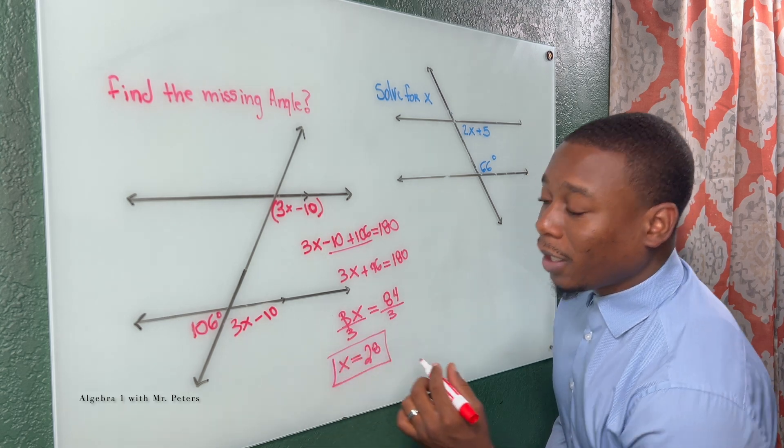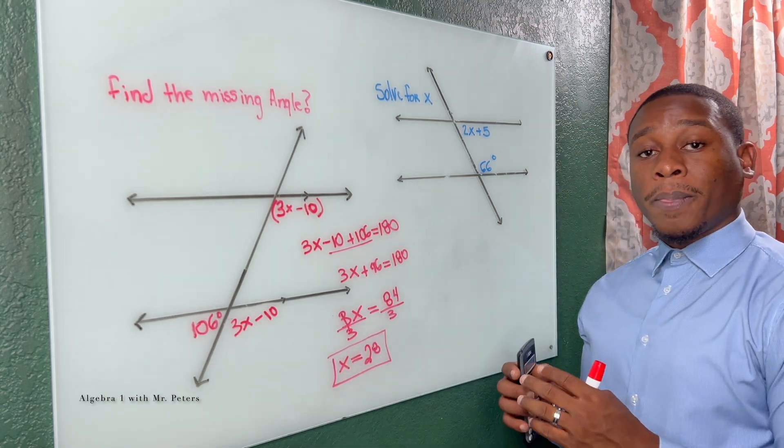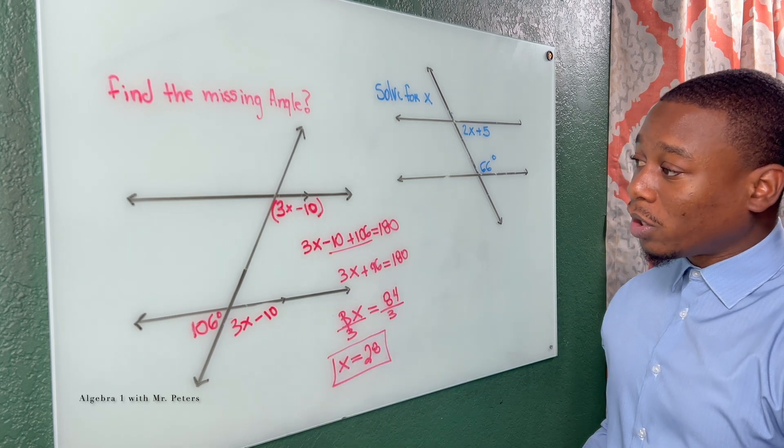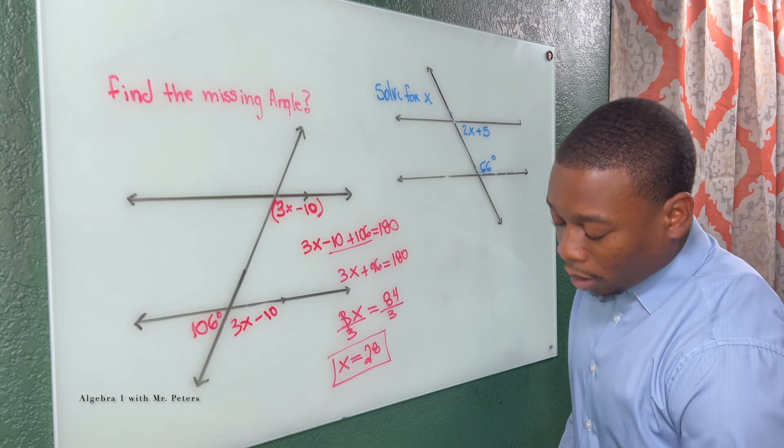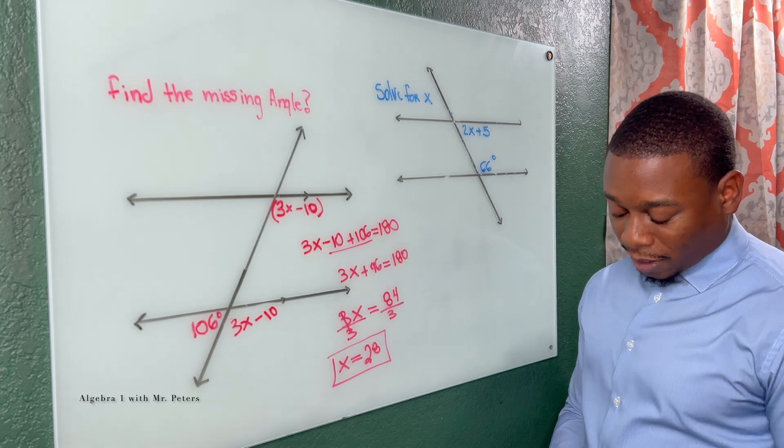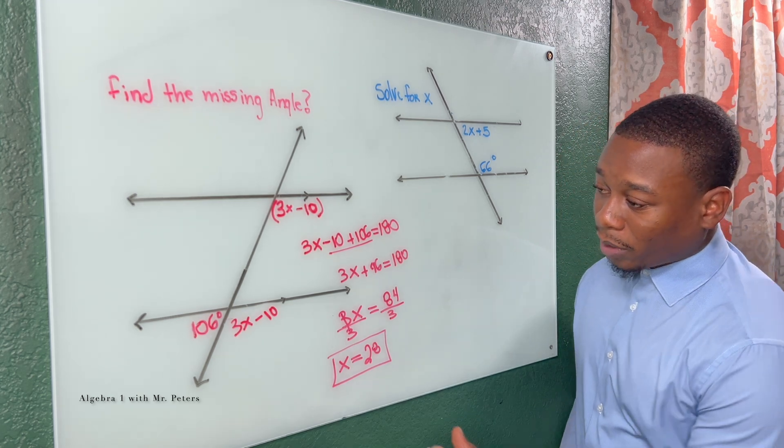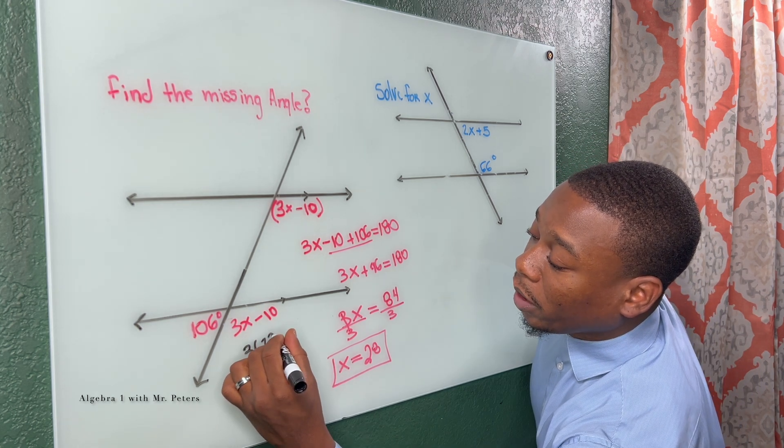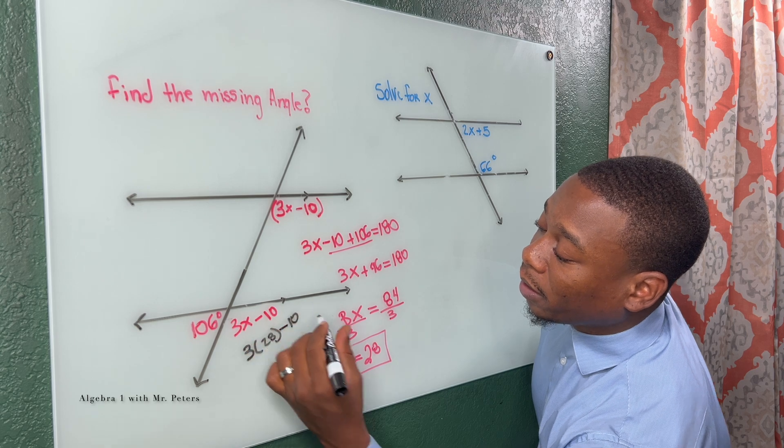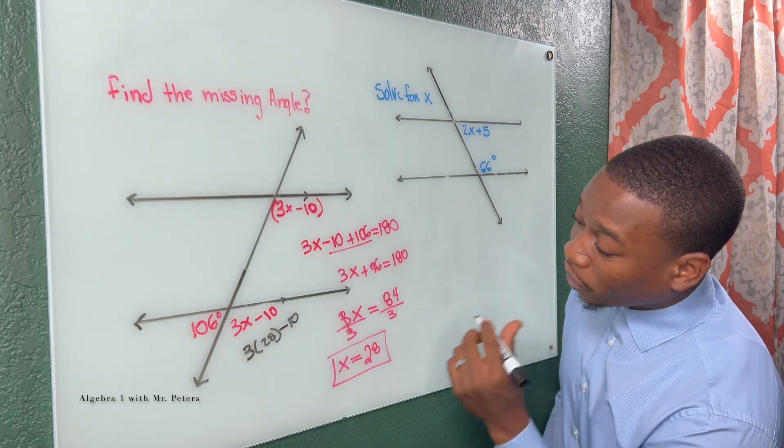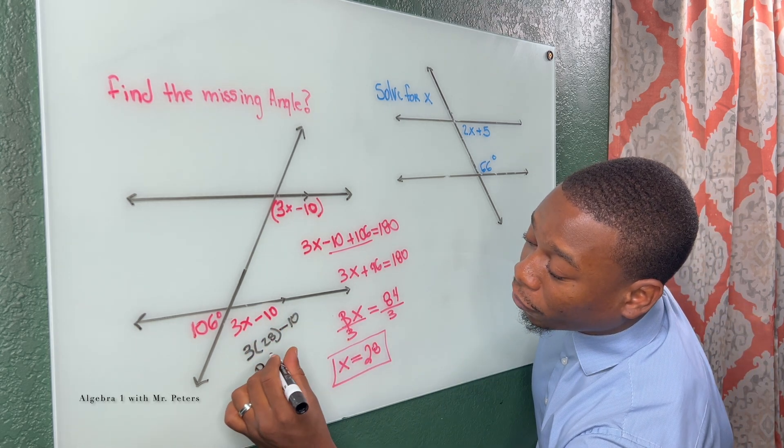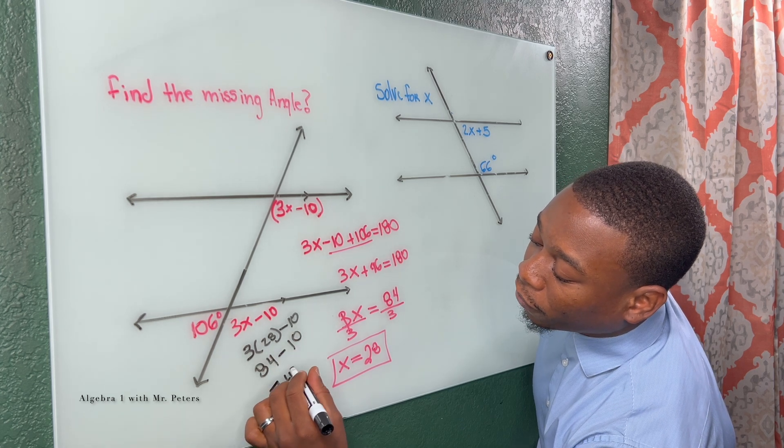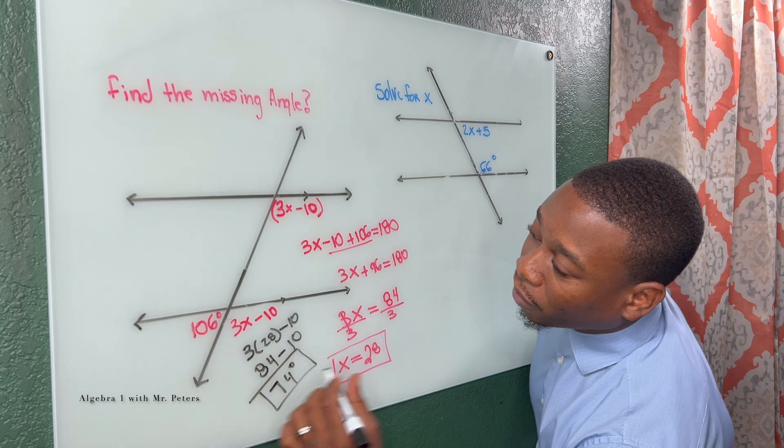So just remember this is x. This does not actually represent the angle measurement. For the angle measurement we just now need to go back in and plug in and simplify. So once I multiply, I'm going to have 3 times 28 minus 10. We know 3 times 28 gives us 84. 84 minus 10 gives me 74 as an answer, which is 74 degrees.